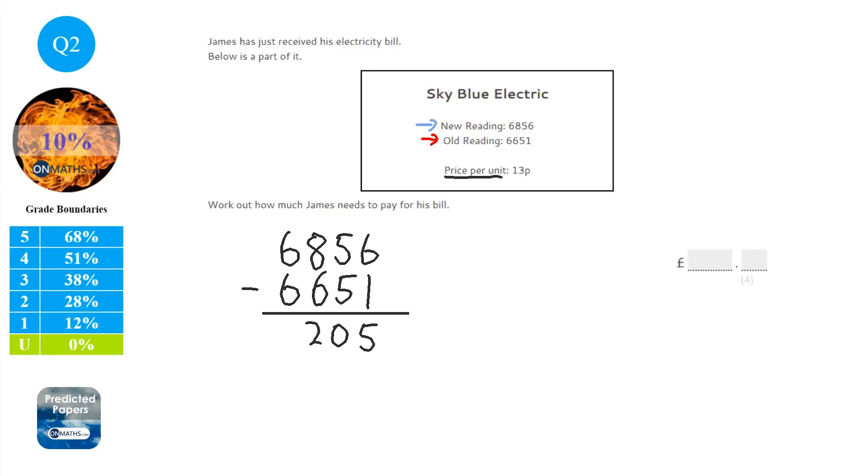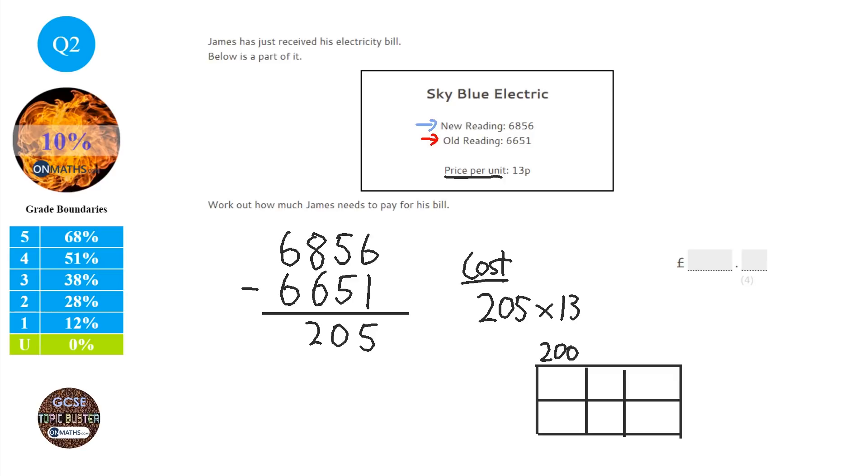Now it says the price per unit is 13 pence. So what we need to do is we've got 205 units and they're 13 pence each. So the total cost of the bill is 205 times 13. So we're going to do a little grid to work this out. This grid looks a bit small. So 205, okay, 0, 10, so we don't need to worry about that column. And 13 is 10 and 3. So 200 times 10 is 2,000. 5 times 10 is 50. 200 times 3 is 600. And 3 times 5 is 15. So we're going to add these together. Make sure you line them up nicely when you add them together. It's very difficult to add them.